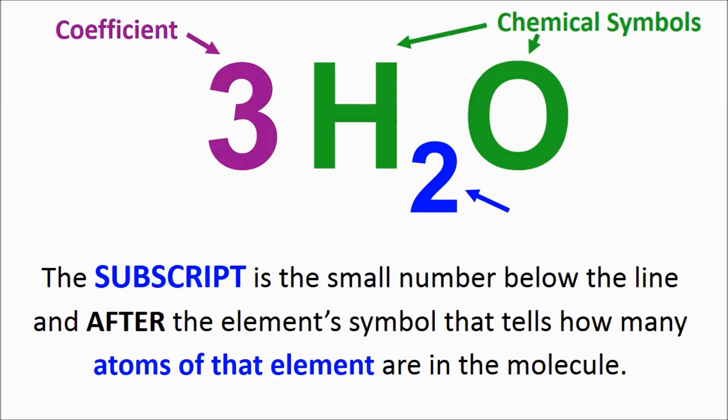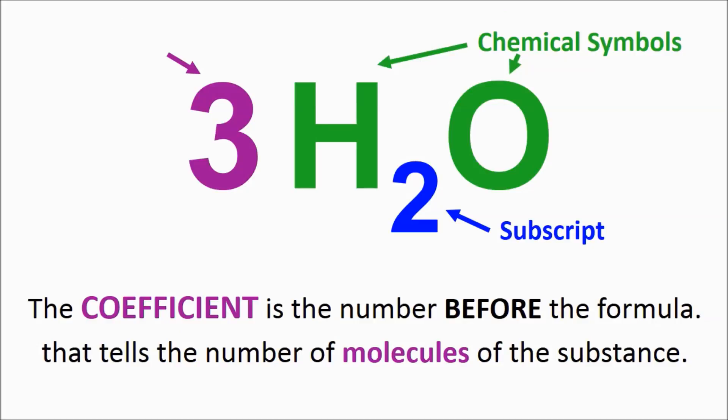Let's recap before you try some on your own. The subscript is a small number below the line and after the element symbol that tells how many atoms of that element are in the molecule. The coefficient is the number before the formula that tells the number of molecules of the substance.